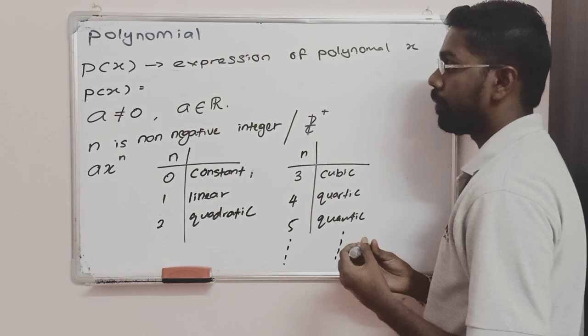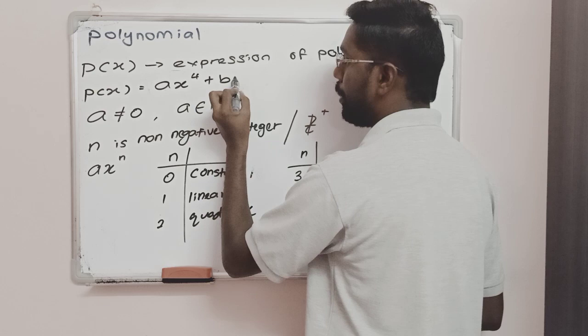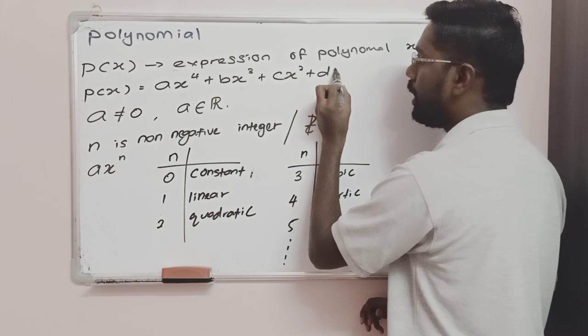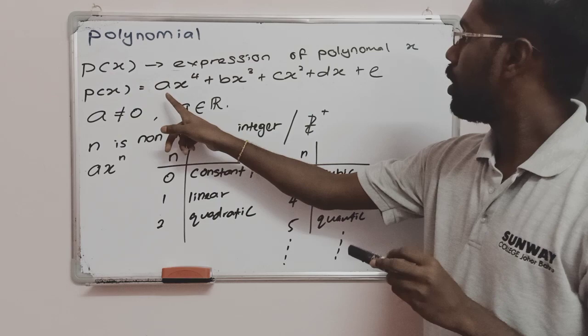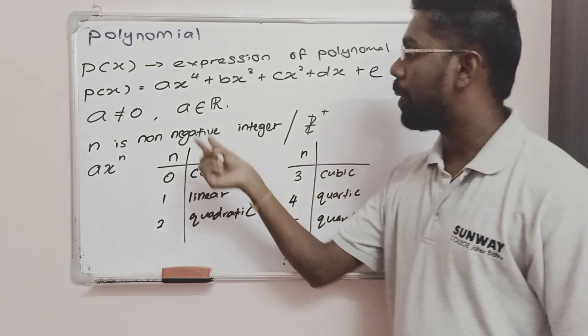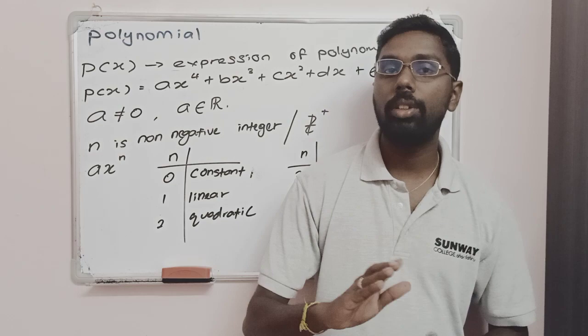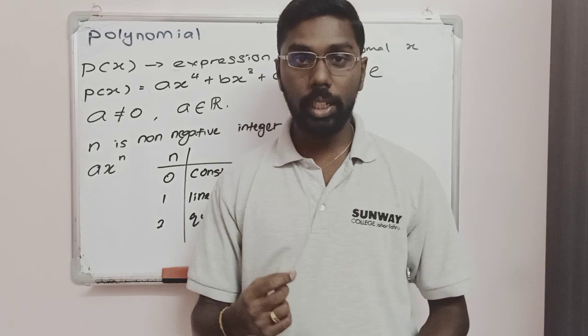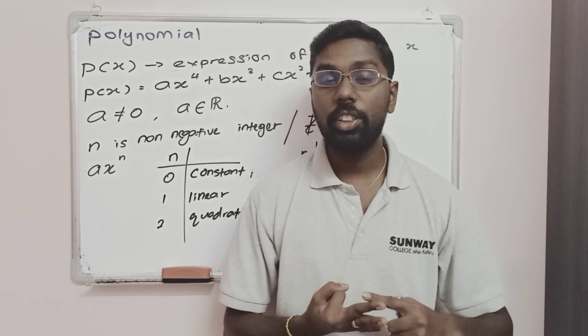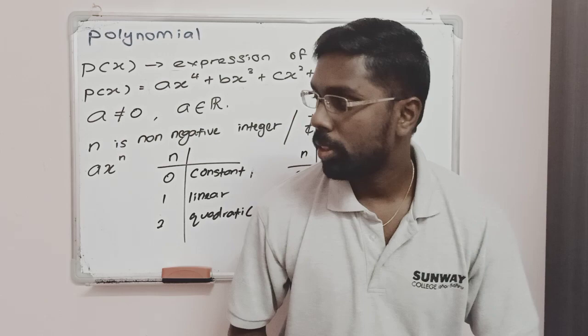Now let's look at n equal to 4. It is going to be ax^4 plus bx^3 plus cx^2 plus dx plus e. So we have 5 terms for the quartic polynomial. Here, the value of 'a' cannot equal 0 — it can be any positive, negative, or rational value, but not 0. Whereas b, c, d, and e can be any value — positive, negative, rational, or even 0.